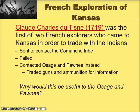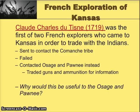Claude Charles Dutton arrived in 1719. He was the first of two notable French explorers to come into Kansas. He was sent to contact the Comanche tribe — that ultimately was a failure — but instead he talked with two tribes we've already discussed in class: the Osage and the Pawnee. To get information about the land, he ended up trading guns and ammunition. The question to consider is: why would this be useful to the Osage and Pawnee — why would they want to trade information to the Europeans for guns and ammunition?